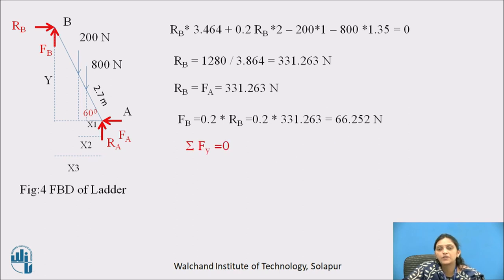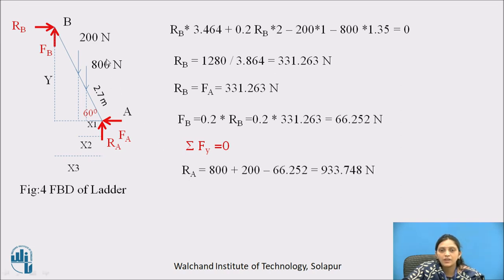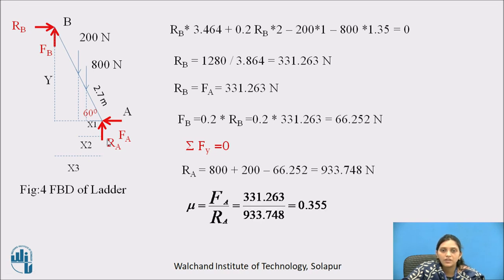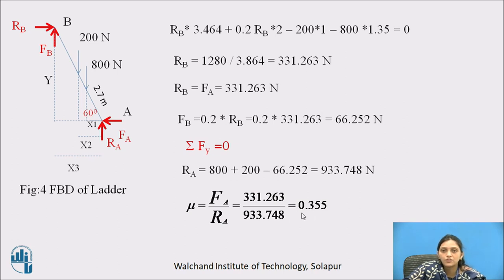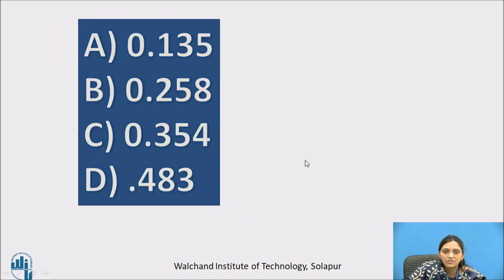Using the last equilibrium equation — summation of vertical forces equals zero — RA = 800 + 200 − FB = 933.748 Newton. The coefficient of friction at A, mu_a, equals FA divided by RA. So mu_a = 331.263 / 933.748 = 0.355, which is close to the correct answer of 0.354.